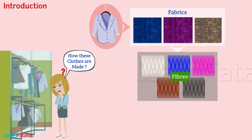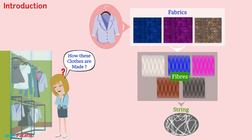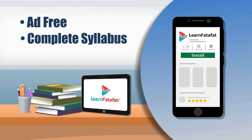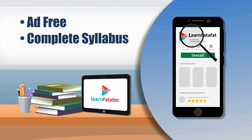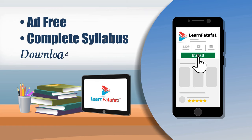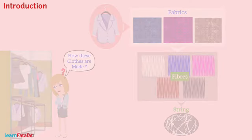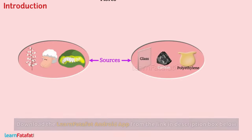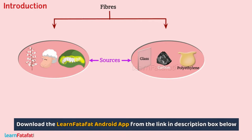A fiber is basically a string made up of some material. On the basis of source, fibers are of two types: natural fibers and synthetic fibers.